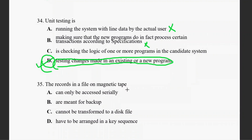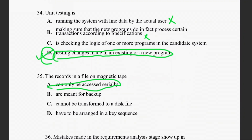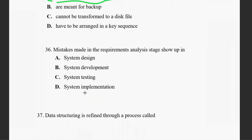Question thirty-five: records in a file on magnetic tape are accessed serially — one by one access. Magnetic tape allows serial access only.